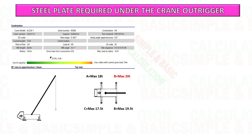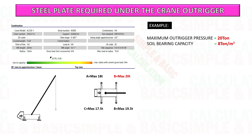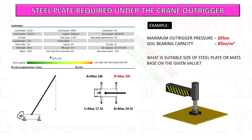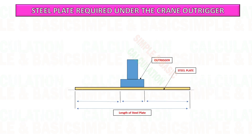In this example, based on crane analysis software to calculate the pressure in each outrigger of the crane during lifting, the maximum outrigger force we get is 20 tons. We assume the soil bearing capacity on site is 8 tons per square meter.